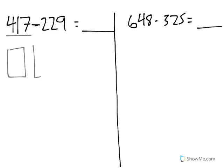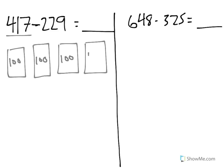What this means is I start with 417, and I'm going to draw it over here using 100 squares. Each of these is worth 100, so as you can see I have 100, 200, 300, 400, and then 10 and 7 ones to represent 417.